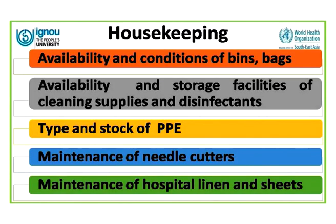Housekeeping is another important component in healthcare facilities. One must check the availability and condition of bins and bags, availability and storage of cleaning supplies and disinfectants, amount and type of PPE — whether disposable or reusable — maintenance of needle cutters, and hospital linen and sheets. We have now learned what to observe and what to inquire into when going through a healthcare facility to oversee healthcare waste management.